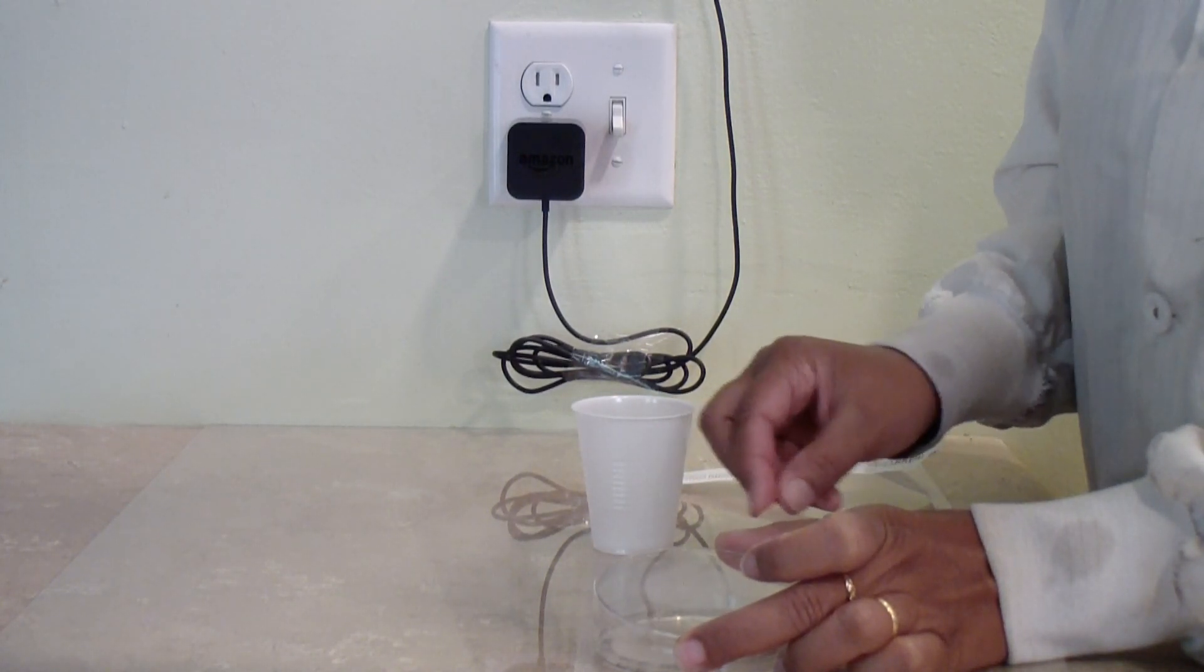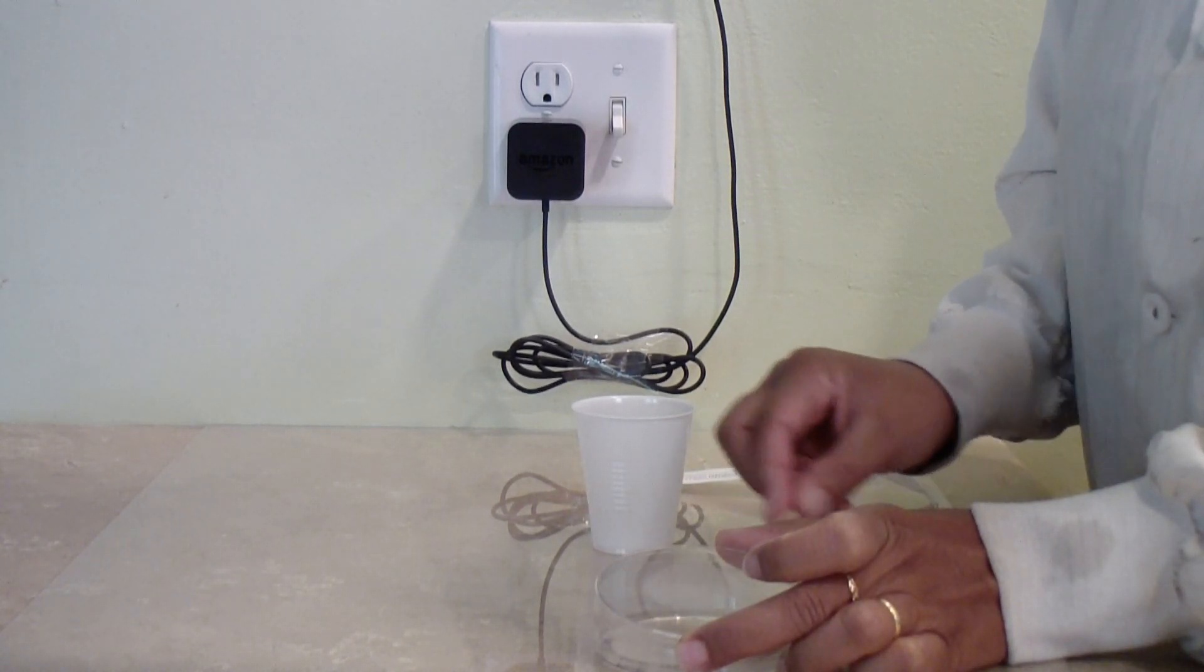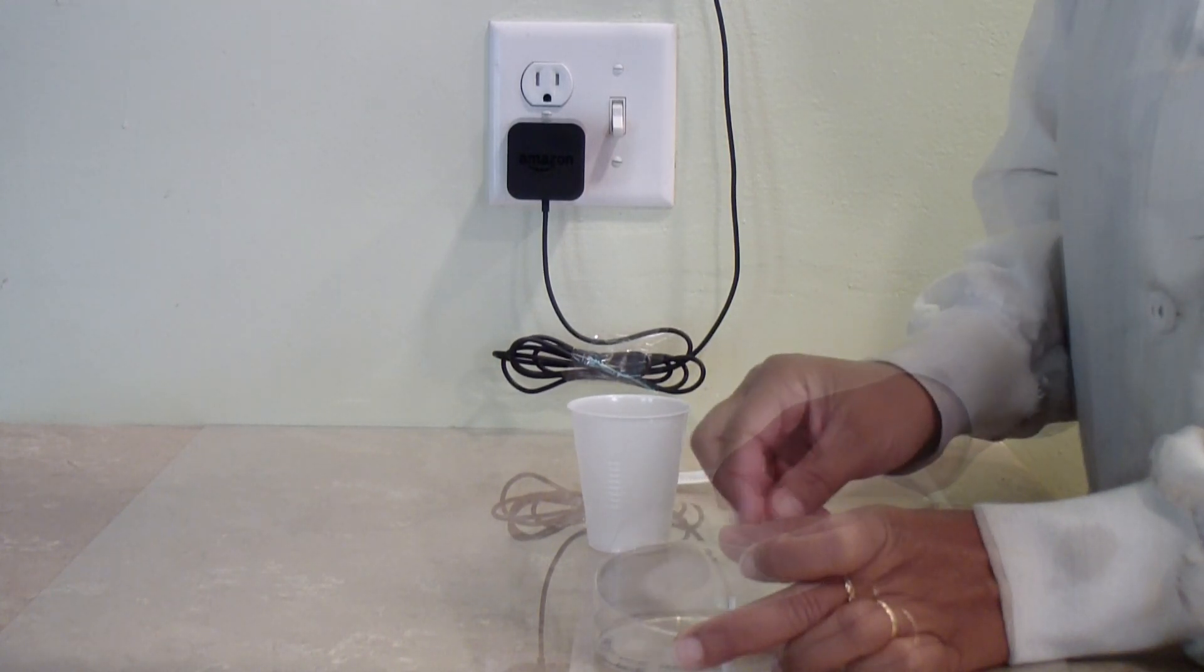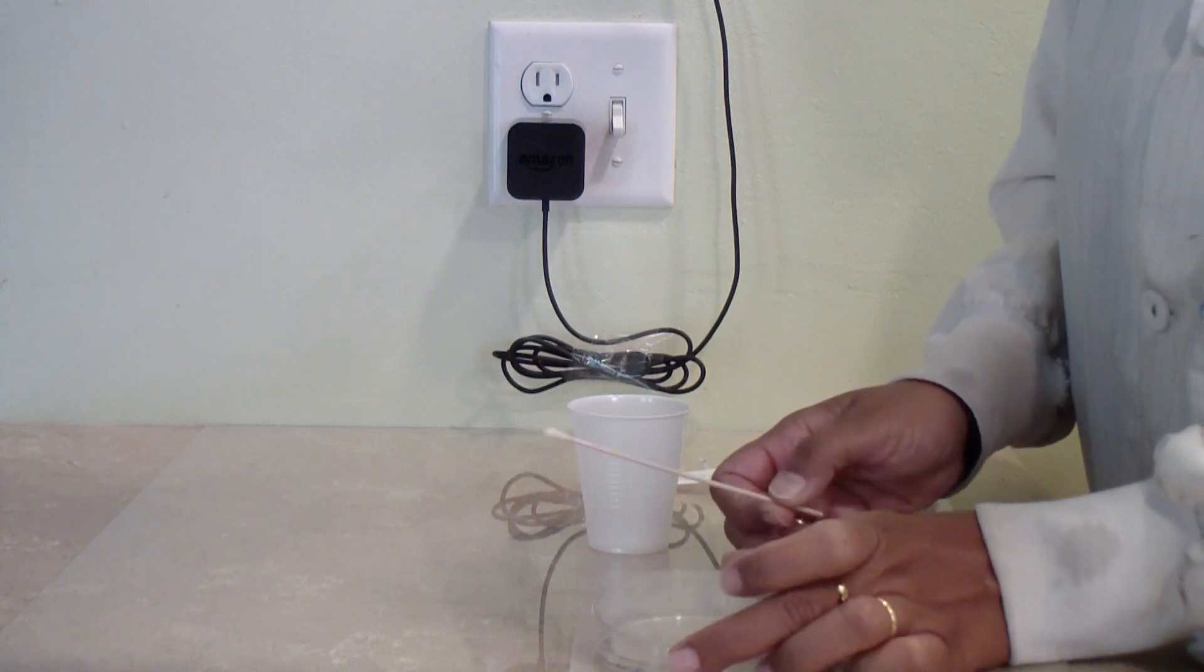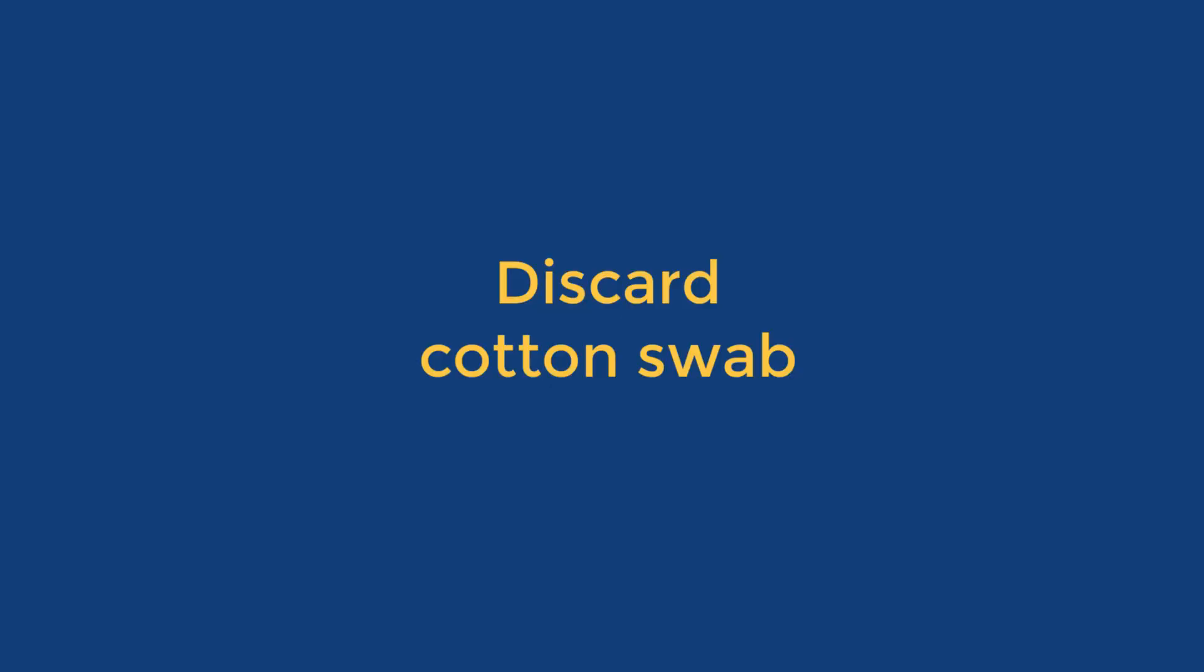Spread some yeast mixture gently over the surface of the plate. Because you only open the plate a little bit, you will not be able to reach all areas of the plate. Turn the plate around so you can spread from a different angle. You may discard the cotton swab with your regular household waste.